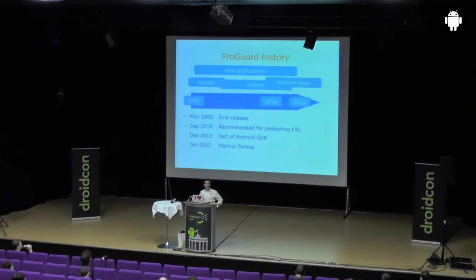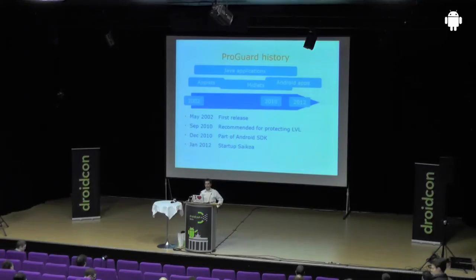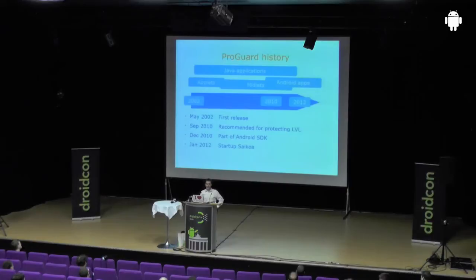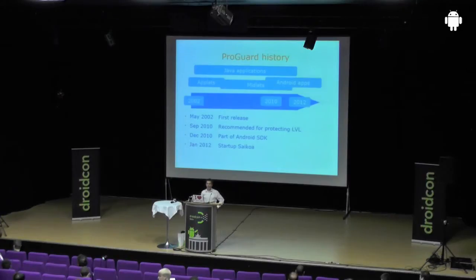A brief history of ProGuard — it's quite a mature project by now. I started it as a hobby in 2002, that's more than 10 years ago. In those days it was mostly used for constrained environments like applets, something that has disappeared now. Then it became popular for midlets — the early Java applications on cell phones — and then later for Android applications. All that time it has also been popular for Java applications in general, mostly because of the obfuscation aspect.